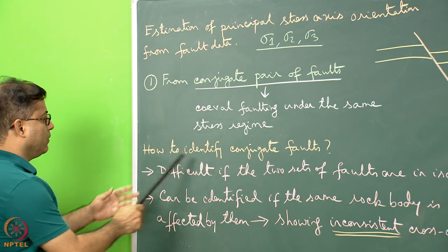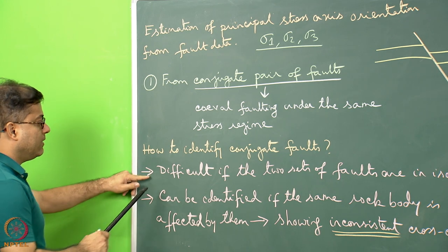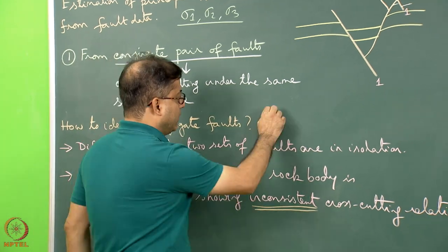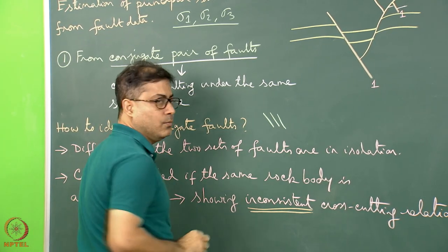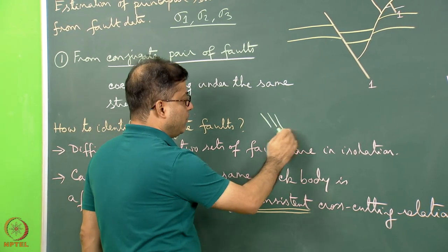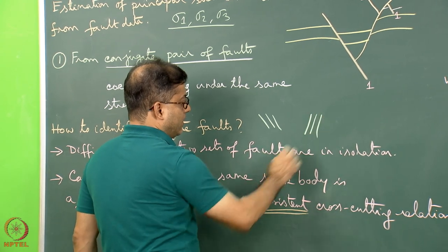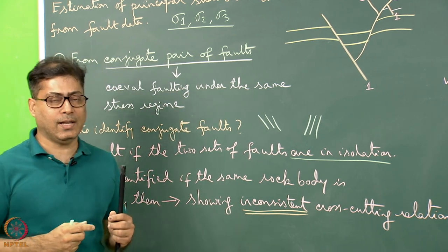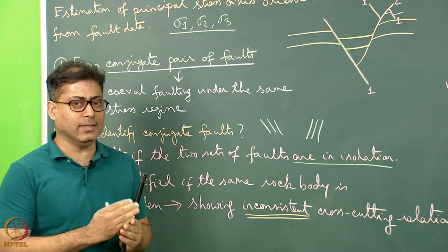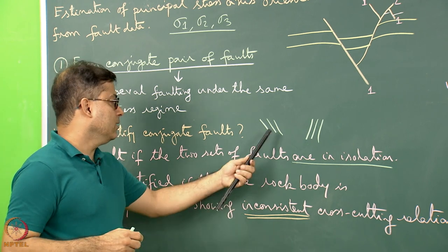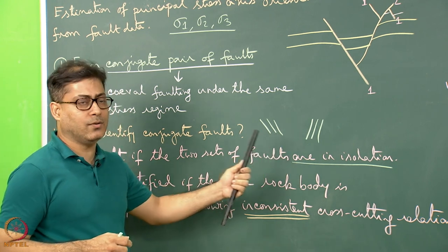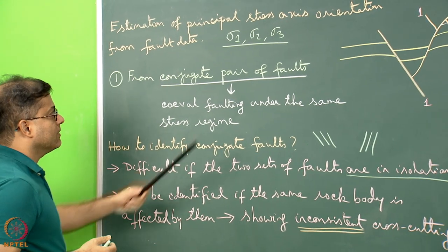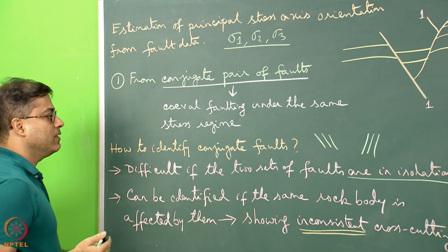How do we identify such conjugate faults? It is difficult if the two sets of faults are in isolation — that is, one set is a few meters away from another and they are not affecting the same rock body or cross-cutting each other. In such a case, even if we call them conjugate faults, finding out the stress axes sigma 1, sigma 2, and sigma 3 may prove difficult.